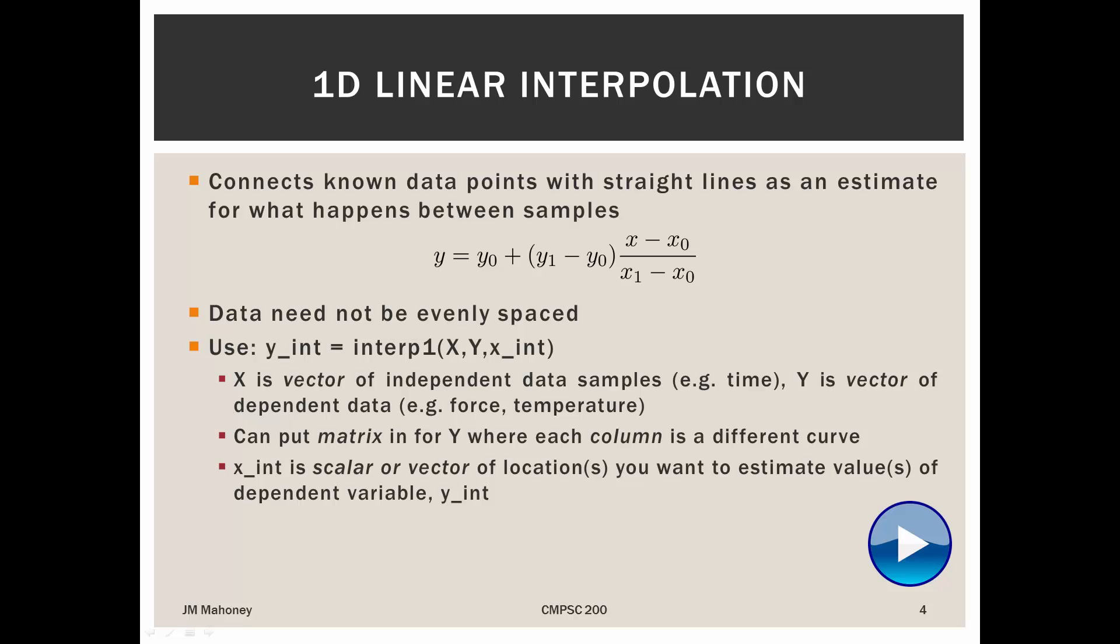So to use interp1, at least the simplest way to use it, the first argument we're going to give it is a list of all of our independent variables. So this is, carrying through our temperature example, all the times that we measured the temperature of something as a vector. The second argument is our dependent variables. So this is, at those times, what was the temperature that we measured?